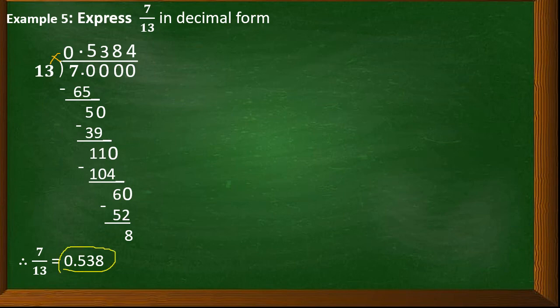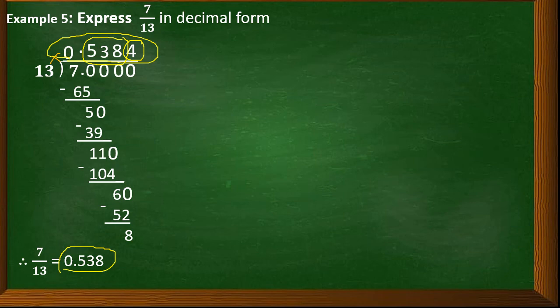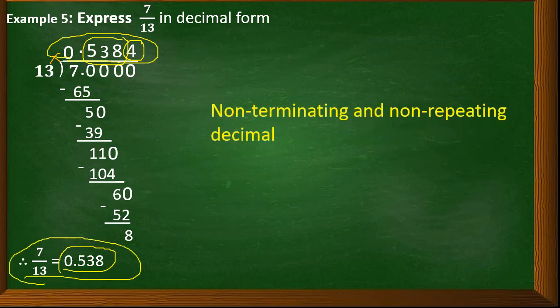Since after 8 the next digit is 4, and 4 is below 5, we just copy 538. If it were 5 to 9, we would add 1. So the decimal form of 7 over 13 is 0.538. This is an example of a non-terminating and non-repeating decimal — it will not repeat and will not terminate.